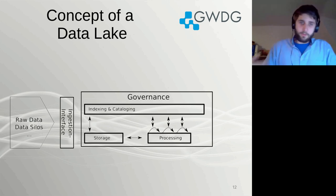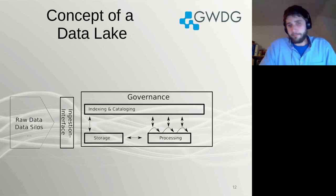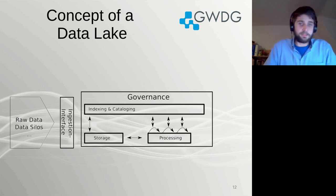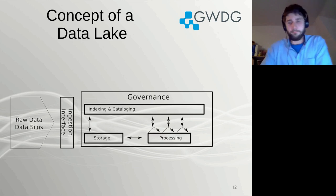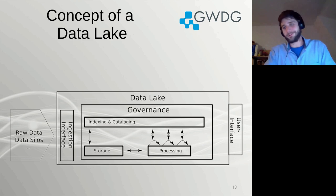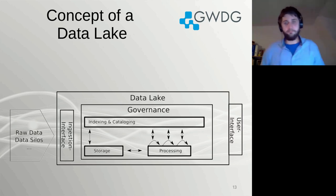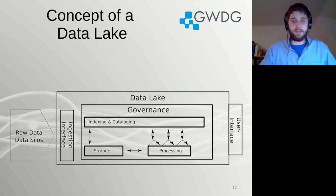It's very important that you have unified, homogeneous governance applied to all data sets across all of these different systems. If you are working with sensitive data, it's completely useless if you encrypt it at rest in your storage system, then transfer it to the HPC system — which is a shared system — and have it there unencrypted. That's a data breach. In the end, you should also include a nice user interface. All of these different components together then build up your data lake.